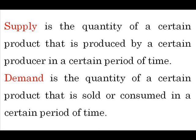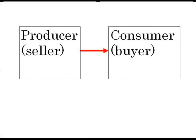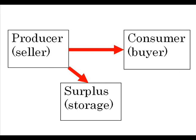Ideally, supply should be equal to demand, meaning that everything that is produced is consumed. What happens if supply exceeds demand? Too many products are being produced, resulting in a surplus. This surplus could be temporarily stored in storage.